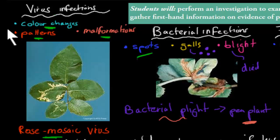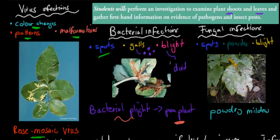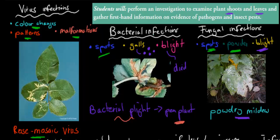Fungal infections are actually the most common infection for plants. What kind of characteristics do they have? Well, they can have spots, just like the bacterial infection. They can also have powdery parts — you can see in the picture there's some powder. And they can also have blight, just like the bacterial infection. Now you can see this powder comes from the powdery mildew — that's the fungal infection. It's literally just powder which starts to encompass the whole leaf, and that means there's a fungal infection. This leaf will eventually die because of that powder — it will kill it eventually.